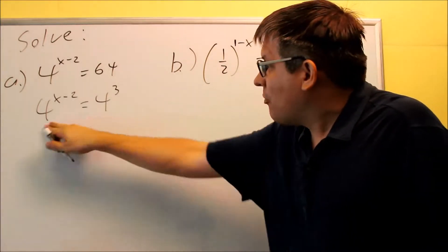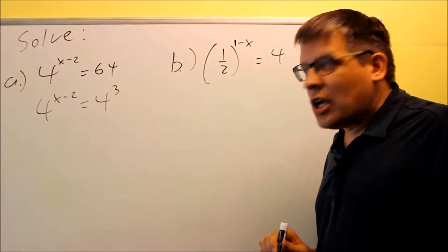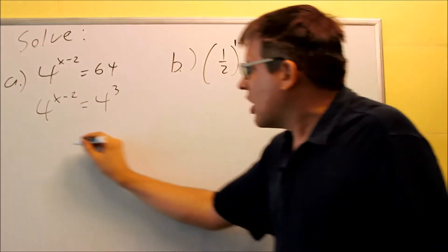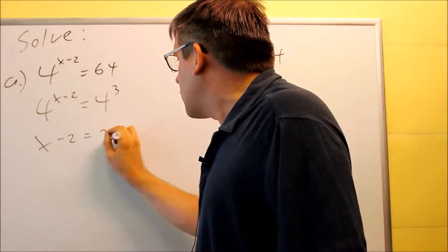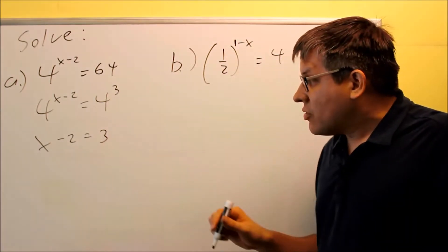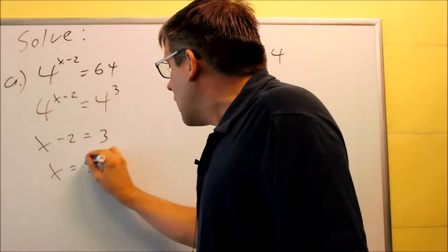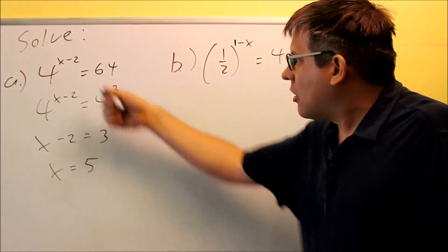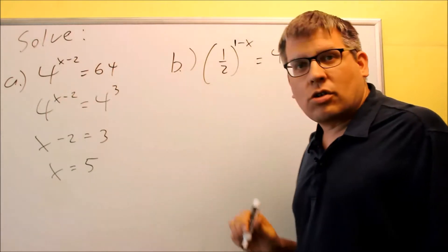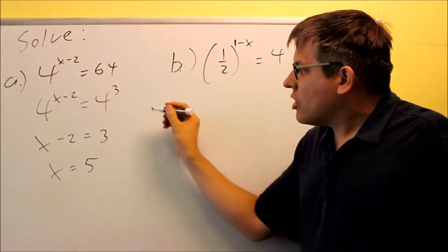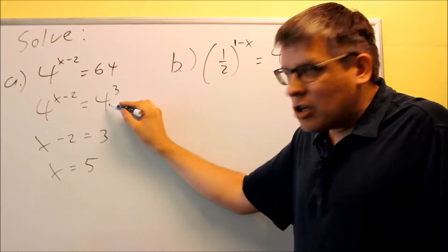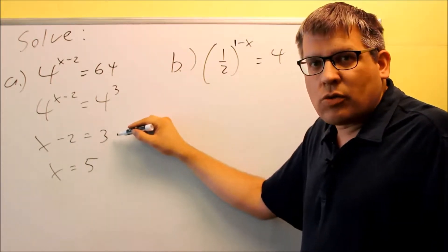Now both bases are the same, so the equal basis property says I can set the exponents equal. So x minus 2 equals 3. Adding 2 to both sides gives x equals 5. That's the value that makes this equation correct. Since both bases were 4, we set the exponents equal and got our answer.